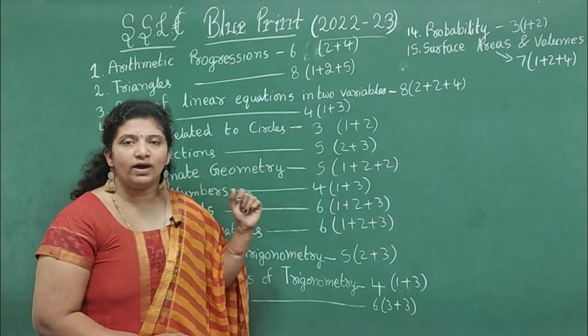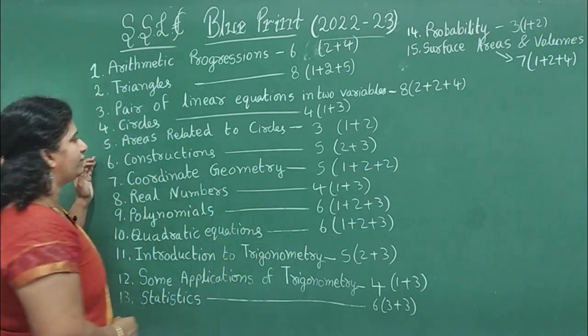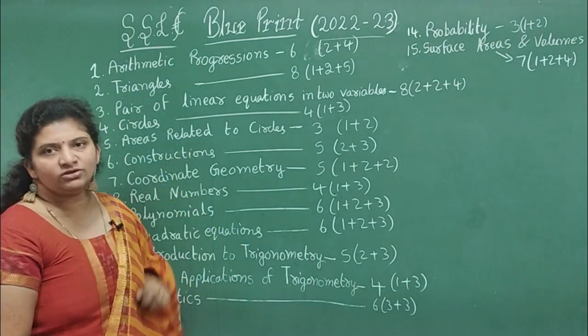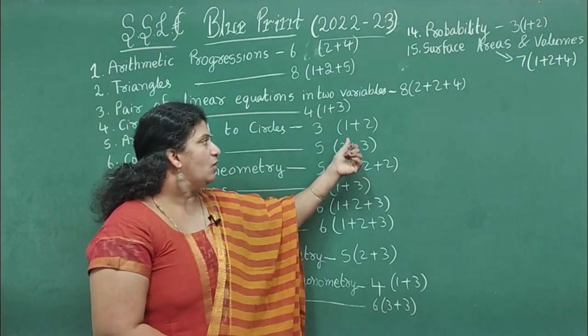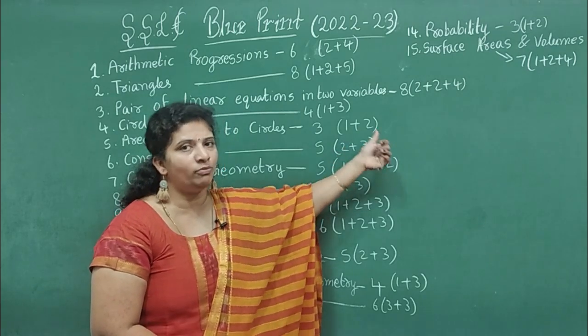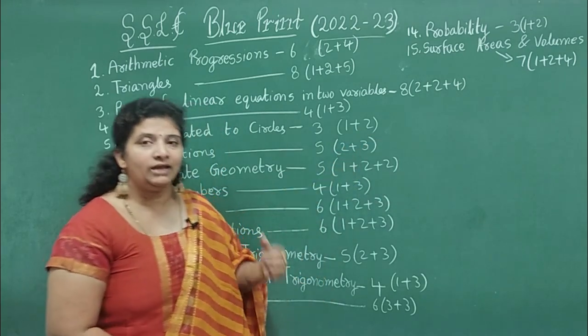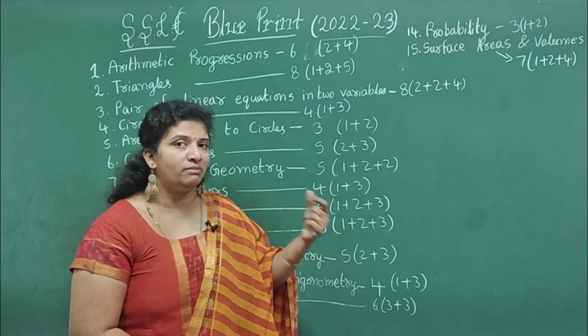Fifth chapter, Areas Related to Circles - weightage will be 3 marks. We can expect 1 plus 2: one mark bit or a two marks question. Sometimes it may change to 4 marks also. Three marks question and one mark bit, or a formula they may ask. Sometimes a mark may be varying.